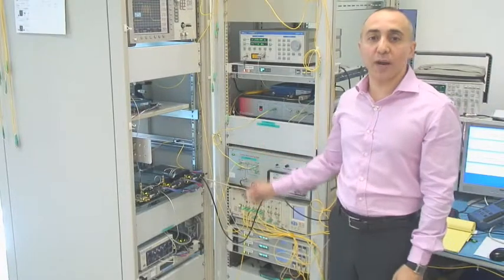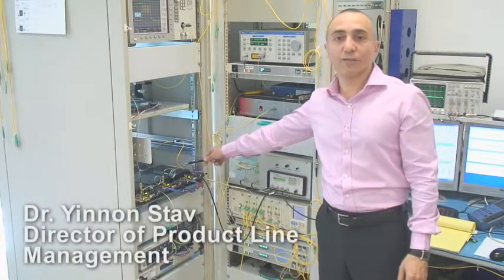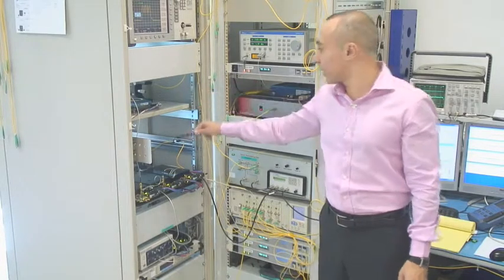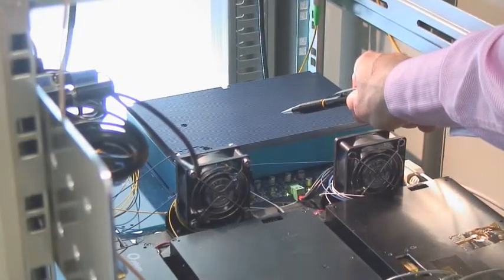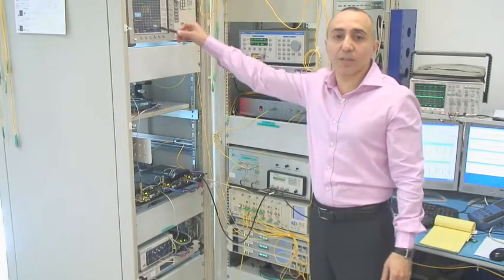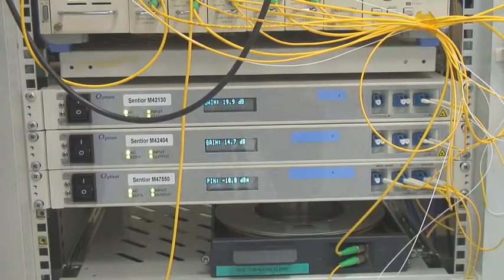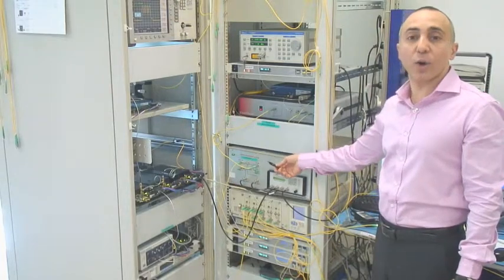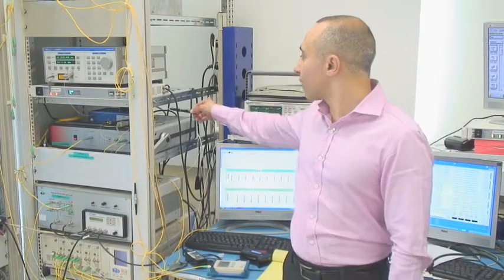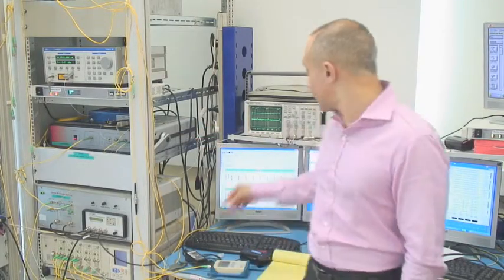The loop comprises an array of Finisar 40 GHz and 10 GHz DWDM transponders, multiplexed together through Finisar's Wavelength Selective Switches. The resulting DWDM spectrum is amplified and launched through an optical switch into the recirculating loop.